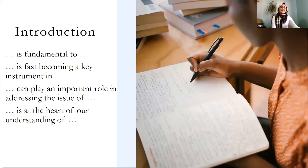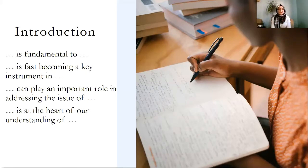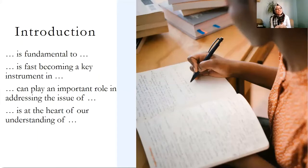Now if we were to read the example sentences — for example, that such and such is fundamental to so and so. When we form this sentence, at the beginning we're writing the topic of your study and then saying what it is fundamental to. The second one: such and such is fast becoming a key instrument in so and so. Or such and such can play an important role in addressing the issue of so and so. Or: such and such is at the heart of our understanding of so and so.